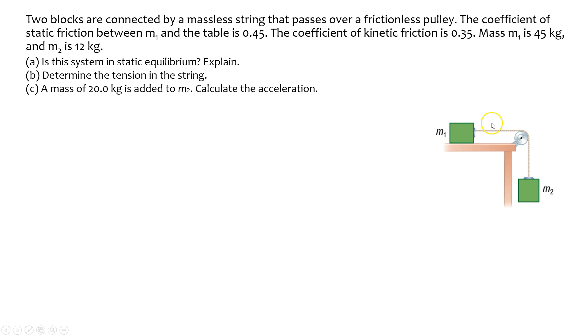So we have a system of blocks here, mass 1 and mass 2, and they're connected to each other via a rope that passes over a frictionless pulley. Part A of this question asks, is this system in static equilibrium? Explain.